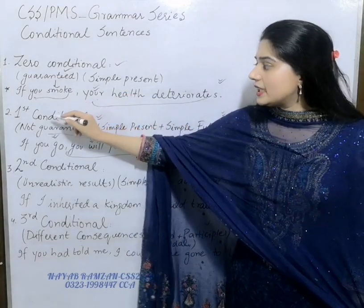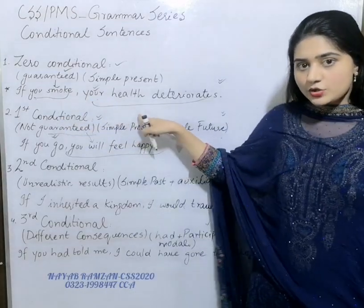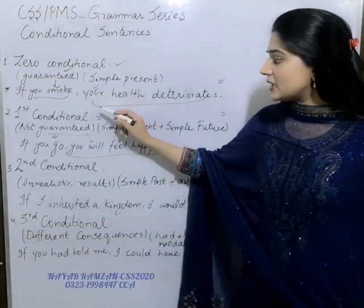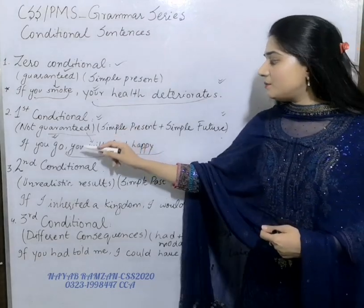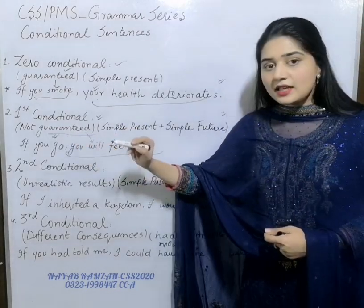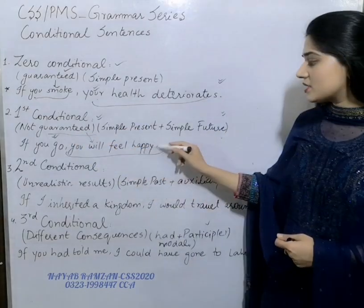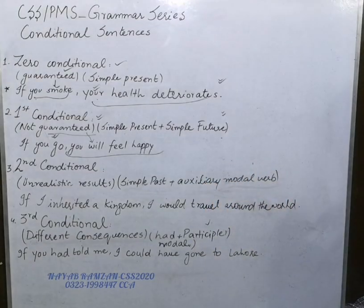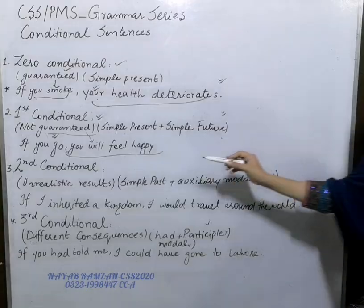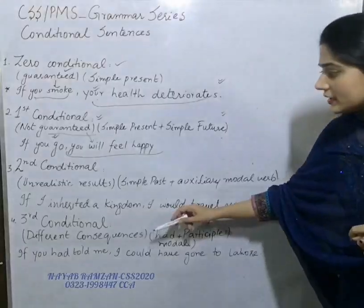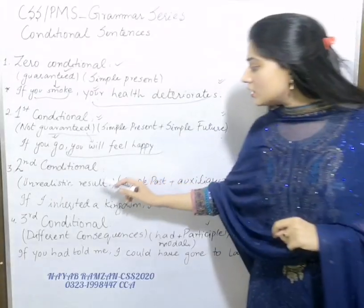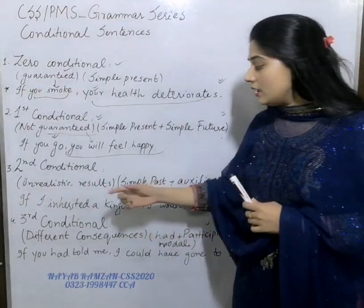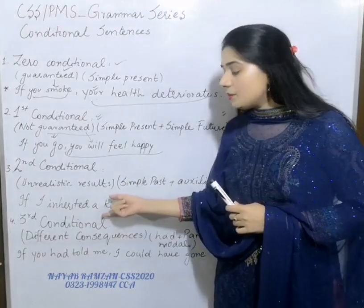To summarize the difference: in zero conditional we use simple present in both clauses because the outcome is guaranteed. In first conditional we use simple present in the if-clause and simple future in the result clause, because the outcome is probable but not certain. Now let's look at second conditional and third conditional, which deal with unrealistic results.